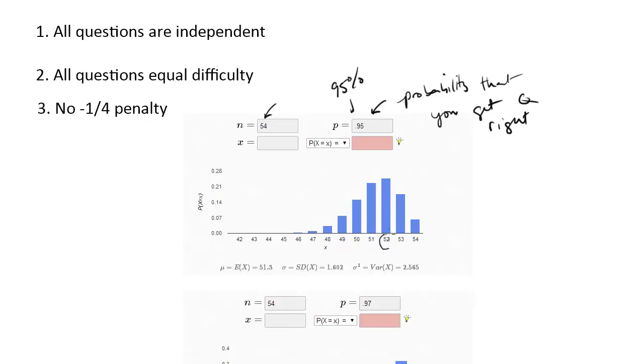So notice, for example, 52 correct is the highest probability. So it's about a... Let's see, what's the actual number? It is a 25% chance. You have a 25% chance of getting a 52. This right here tells you the average. So if you have a 95% accuracy, your average score will be a 51. Again, keeping all these assumptions in mind.